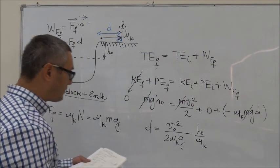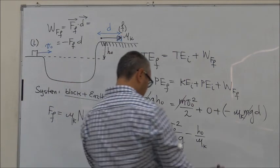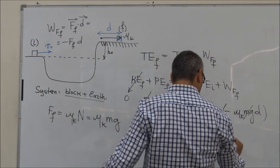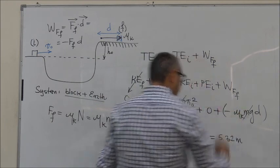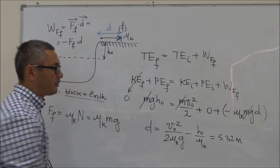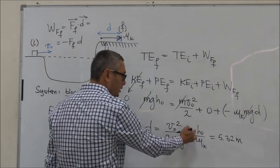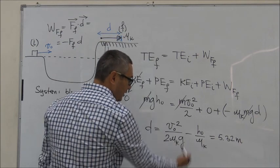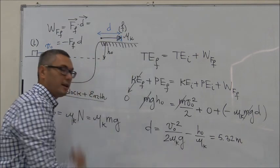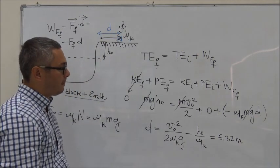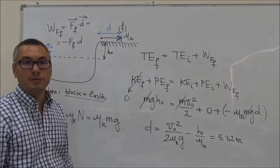Now, if you substitute for the numbers, the value that you get is 5.32 meters. Remember that in the problem we are given the initial velocity, the coefficient of kinetic friction, and H0, and we know the freefall acceleration, so we can calculate for D. The answer is 5.32 meters.